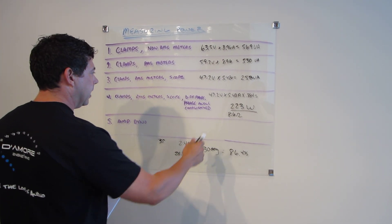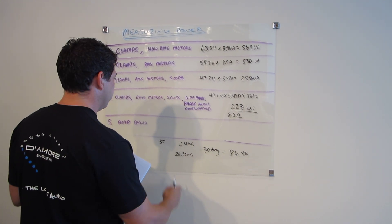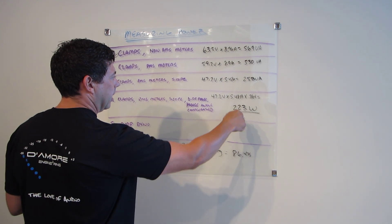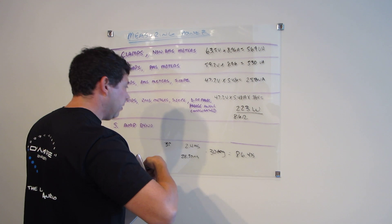We're going to run it on the amp dyno. Amp dyno doesn't have an 8.6 ohm load but it has an 8 ohm load. So we can do that just for fun just to see where we're at but it should be around 250 watts because 8 ohms is a little bit more power. Let's run that real quick.